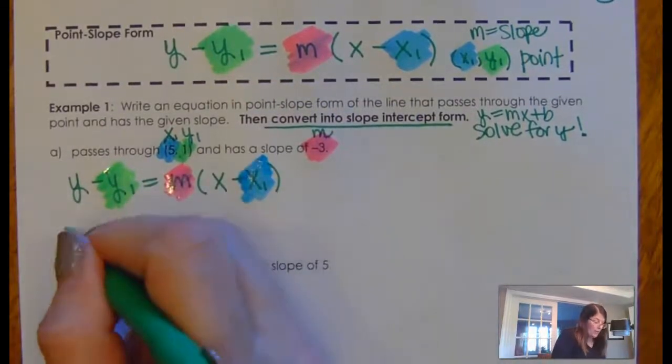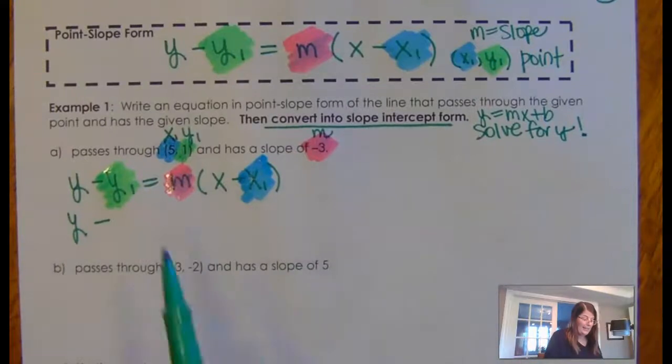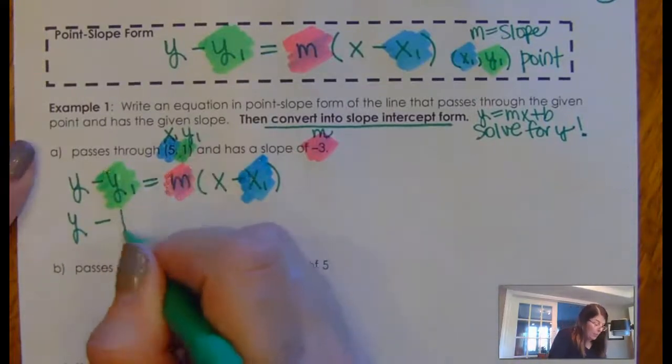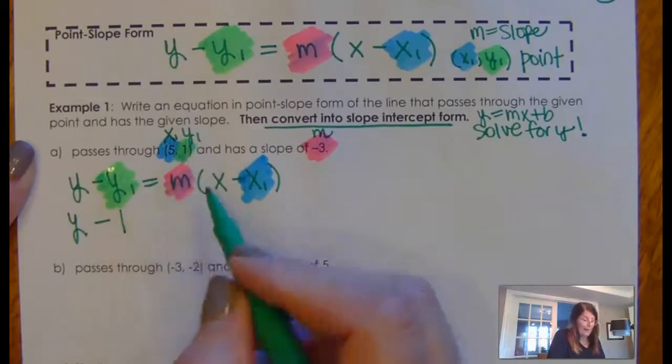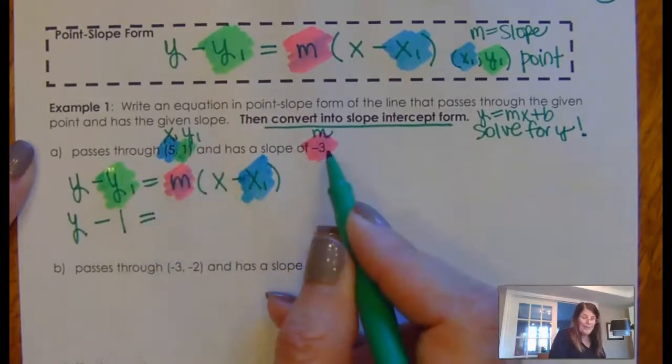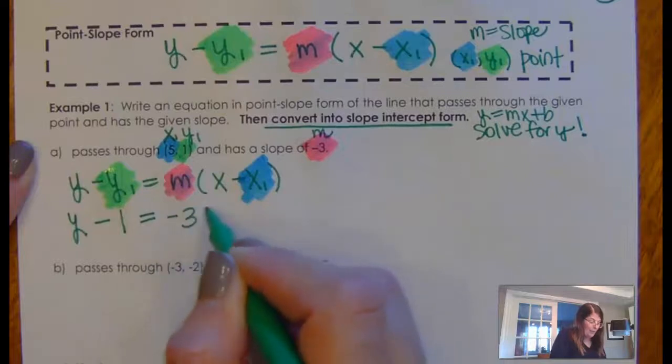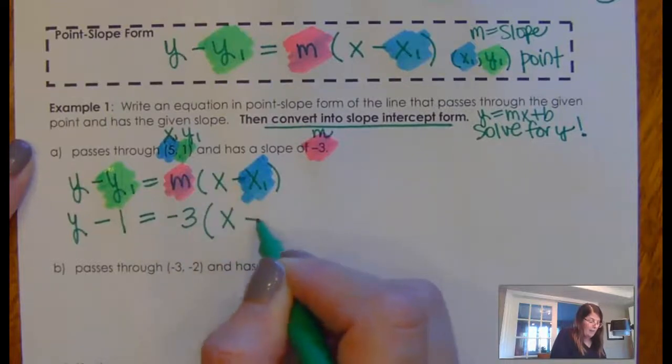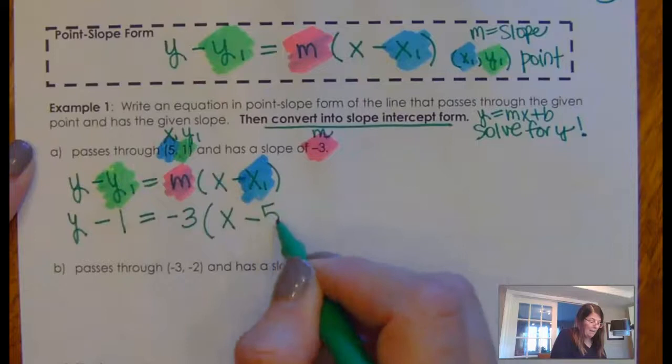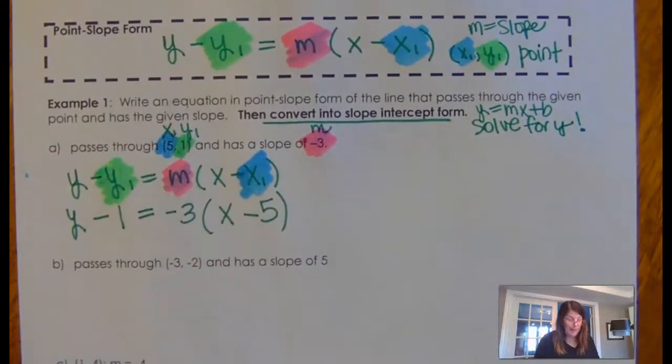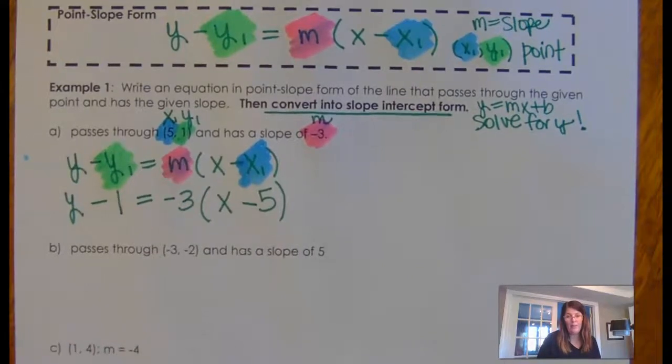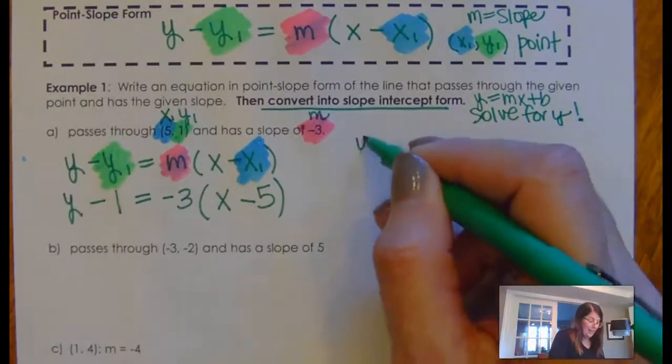So when I go to do this, it's Y minus, hey, what's the Y1? It is 1. Be careful that you take the number in the Y spot is equal to, what's the M? Negative 3. X minus, what's in the X spot? 5. Okay, now, let's just have a little happy dance and celebrate for a minute, because we just wrote the equation of the line in point slope form.